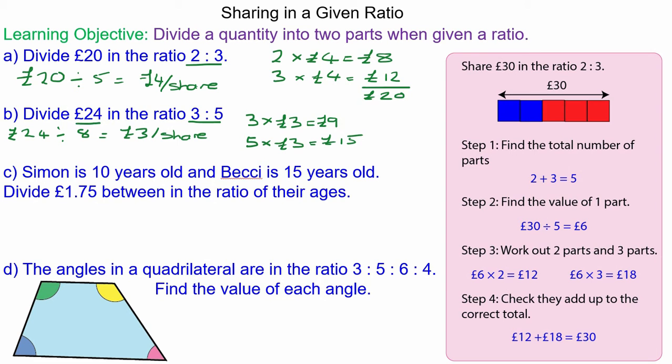Simon and Becky divide £1.75 between the ratio of their ages. Well to make this a little bit simpler, we can simplify this ratio of 10 to 15 by dividing by the highest common factor which is 5, so you could simplify it to 2 to 3. So £1.75 divided by a total of five shares gives 35 pence per share.